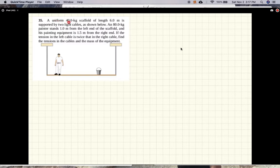Again, in this problem, a uniform 40 kg scaffold of length 6 meters, so this scaffold is 40 kgs and it's 6 meters long, is supported by two light cables as shown.